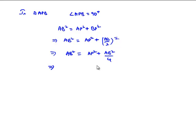Now, let us transpose right-hand term, that is AB square by 4 to left-hand side. We get AB square minus AB square by 4 is equal to AP square.